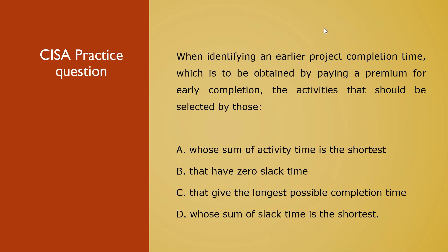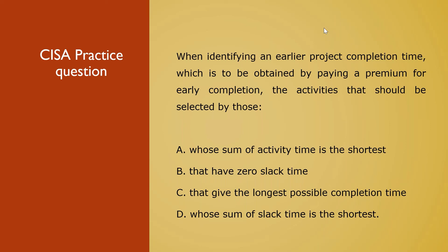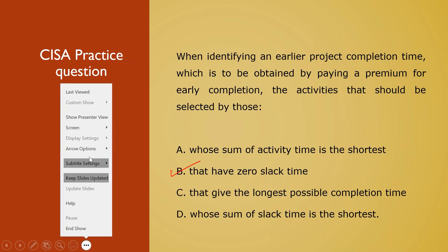A critical path is defined as having zero slack time. On a critical path, you cannot delay any specific process even by a minute — if delayed, it will impact the overall closure of the project. The concept is: activities on the critical path have zero slack time, meaning they must be completed exactly on time with no delay allowed. Conversely, if a path has zero slack time, it is a critical path. The project must be completed within the earliest possible time — that is the keyword. Completing within the shortest time means working through the critical path, which has no slack time.